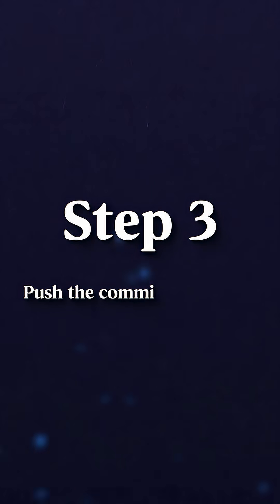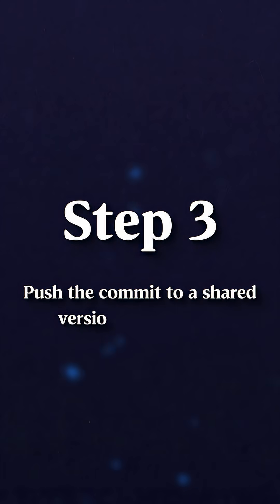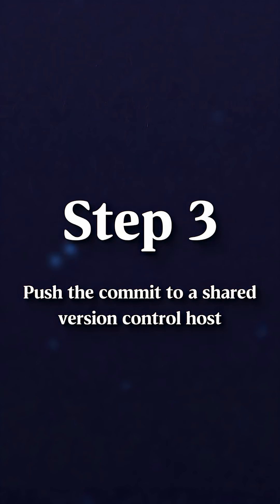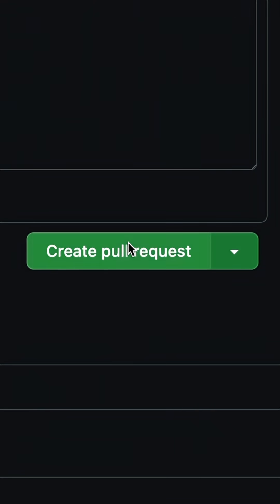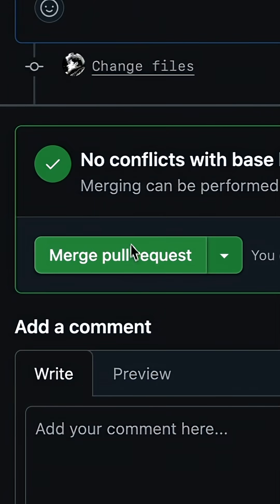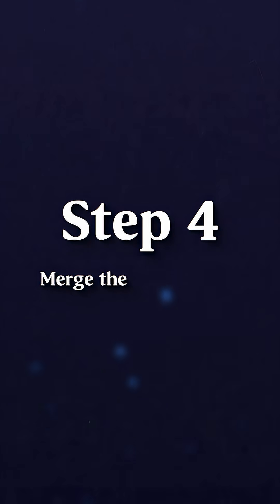Step three is to push the commit up to your shared version control host — this might be GitHub or GitLab, for example — and then to open a pull request to merge your new change into the production branch. Step four is to merge the pull request, so your changes are now in the production branch. At boot.dev, we use main for production, but there are lots of conventions here.